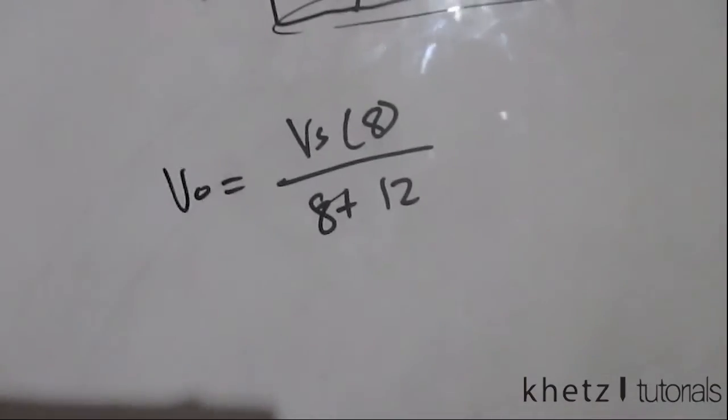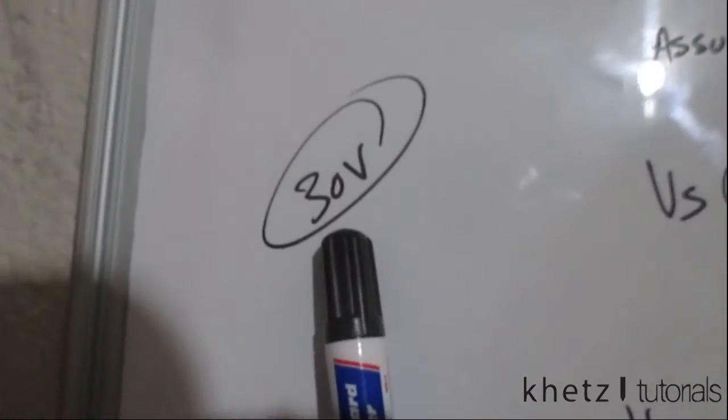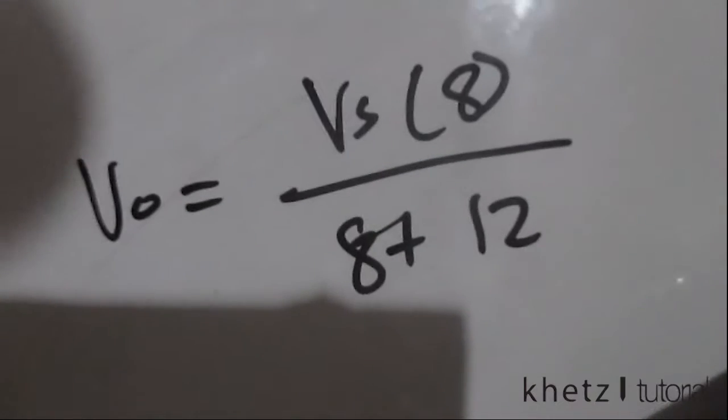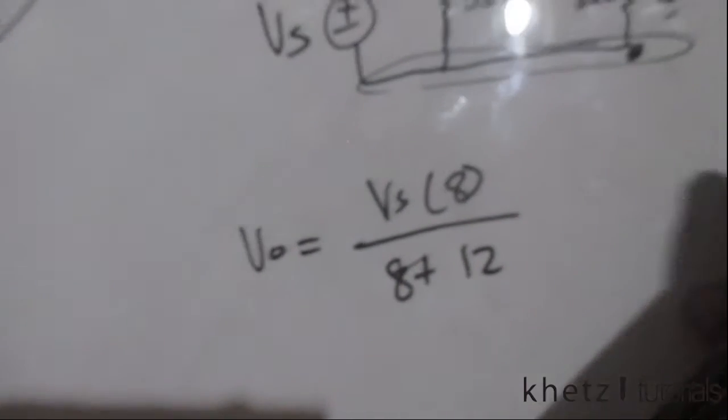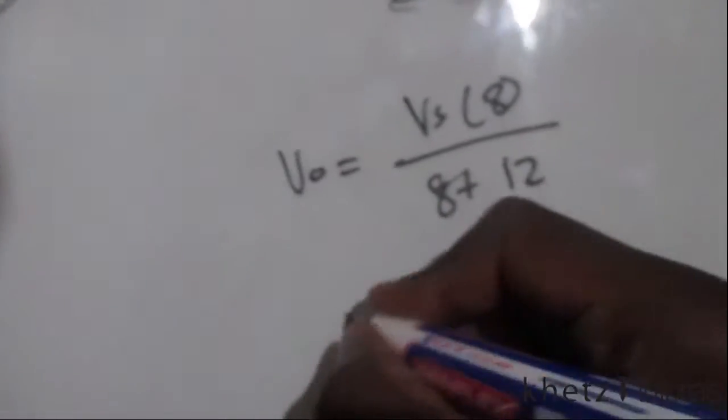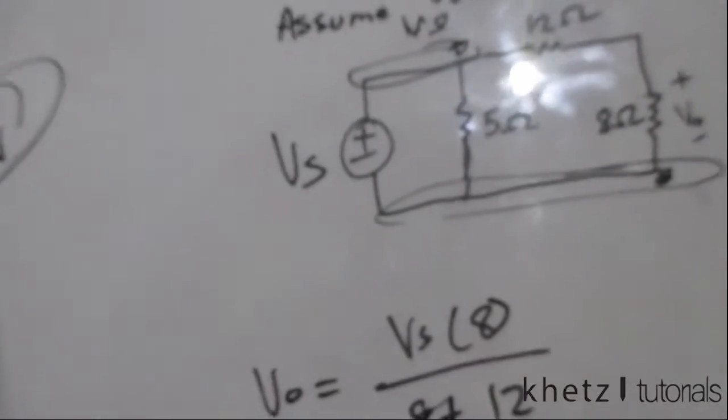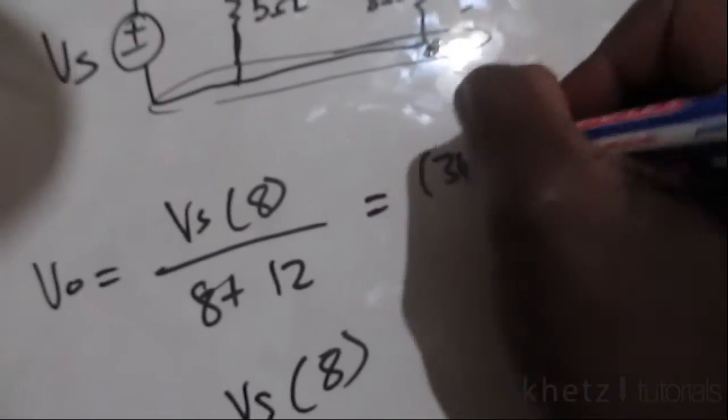We'd just do this using this 30 volts, but we want to use the linearity property. We're given a value of vo which is in this case 1, so we're given 1 on this side, and we're asked to find the actual value if this vs is 30. Let's just quickly substitute the 30 here.